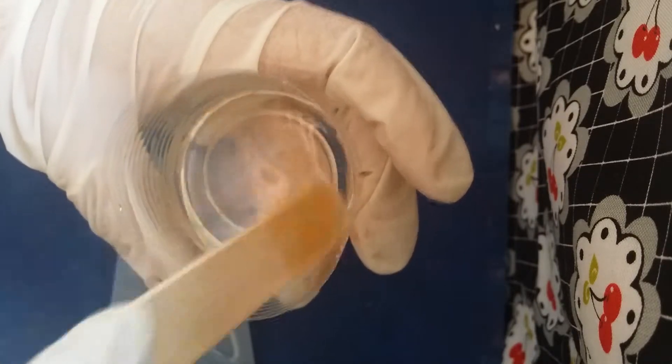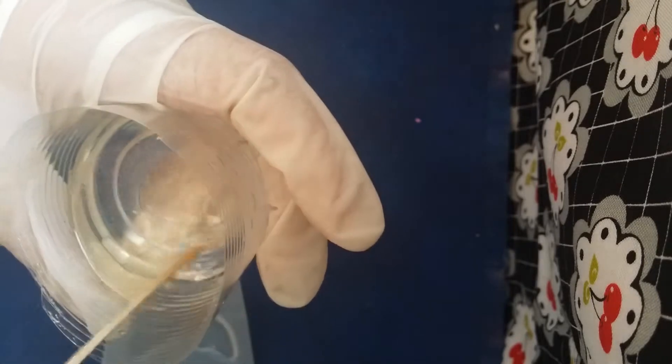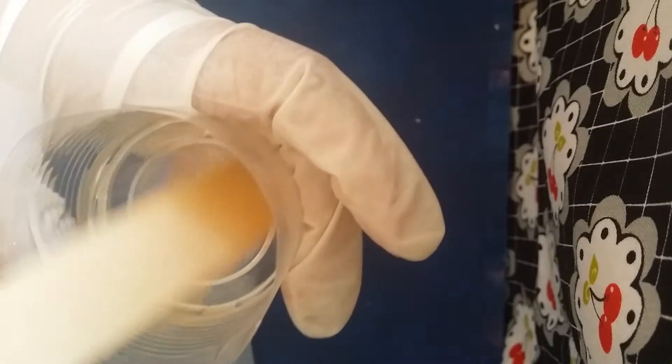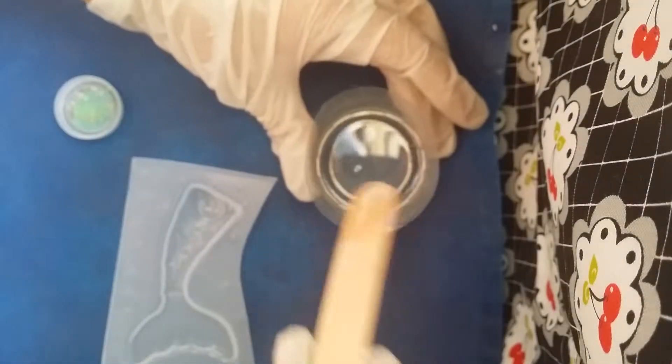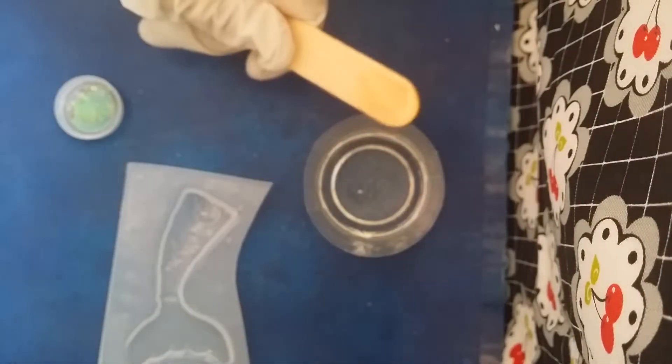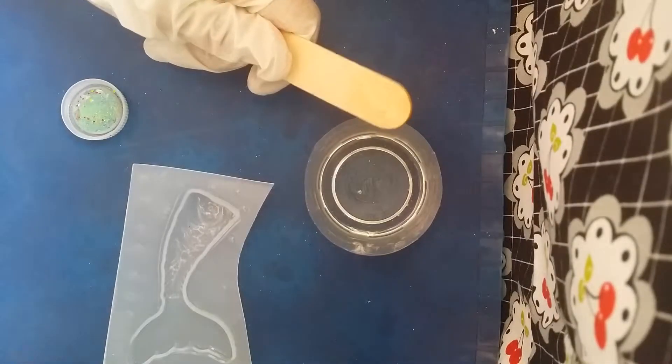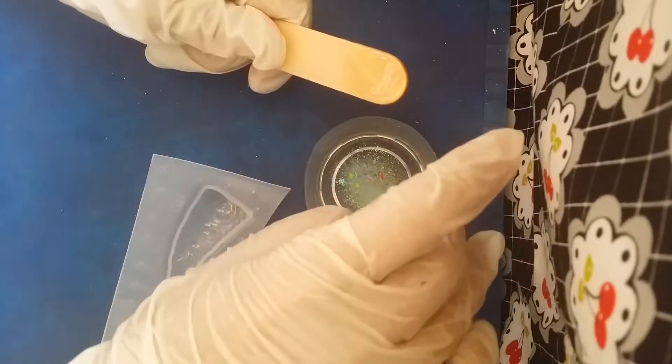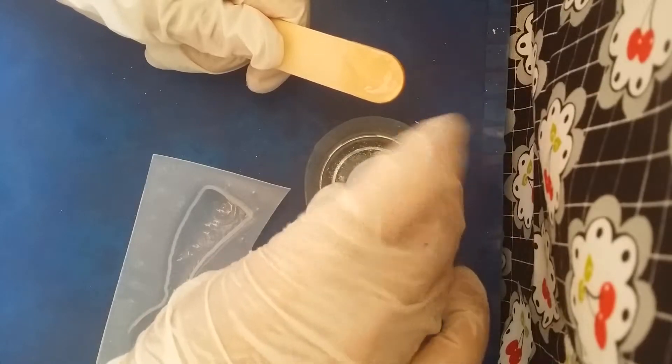For those of you who don't know, resin basics is just basically one to one ratio of two different mixtures, and then you just mix it till it's clear. I had some glitter in this cup before, so it's a little sparkly, but there it is. And now I'm gonna try mixing it with this glitter and see how it comes out.